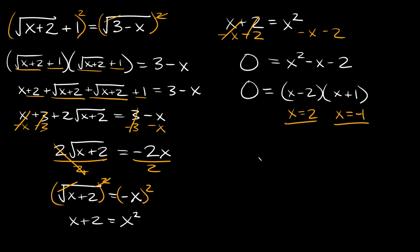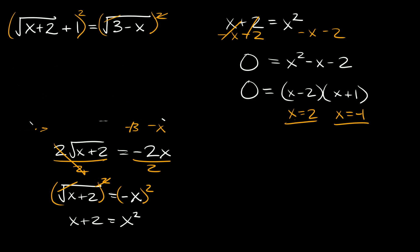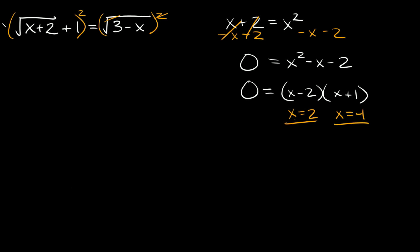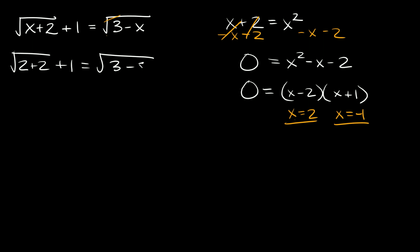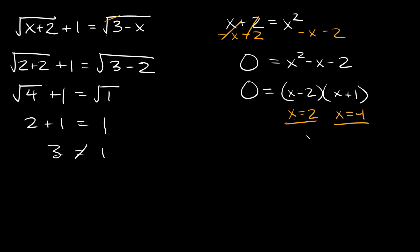So we got two answers: 2 and negative 1. The last thing we have to do is check each one in our original equation. Let's first try x equals 2. Plugging in: the square root of 2 plus 2 plus 1 equals the square root of 3 minus 2, which gives square root of 4 plus 1 equals square root of 1, so 2 plus 1 equals 1, meaning 3 equals 1. That's obviously false, so x equals 2 is an extraneous solution — not a real solution.